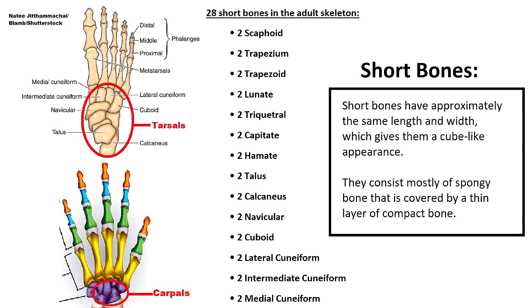Next we have short bones, which have approximately the same length and width, giving them a cube-like appearance. Short bones consist mostly of spongy bone covered by a thin layer of compact bone. There are 28 short bones in the adult skeleton, consisting of the tarsals and most of the carpal bones of the wrist.